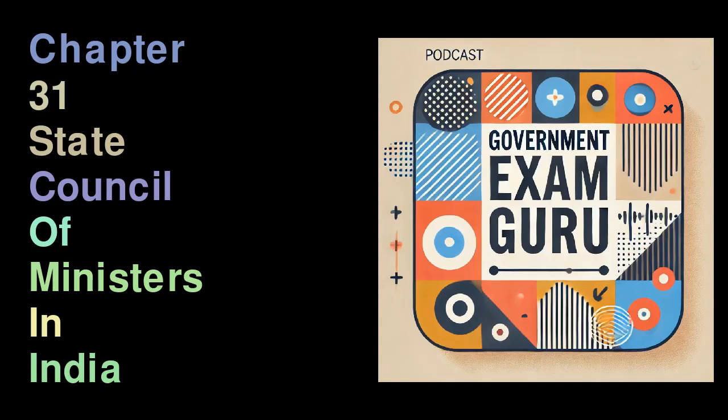The Constitution of India establishes a parliamentary system of government in the states similar to the system used at the national level. In this setup, the real executive power lies with the Council of Ministers, which is led by the Chief Minister. The Council of Ministers in each state is formed and operates in a way that mirrors the Council of Ministers at the central government level.